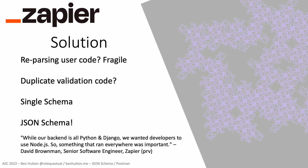Zapier considered automating code reparsing, but that was tricky and pretty fragile. Identical validation code was needed to work on the client side and the server side — porting validation code between programming languages in both directions is not fun. A solution that provided interoperability between programming languages was required. And JSON Schema delivered. Seriously, get JSON Schema a cape or something. I might be biased. Might.